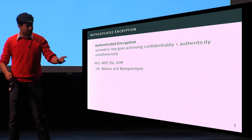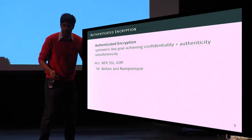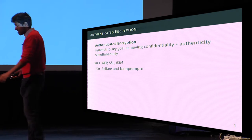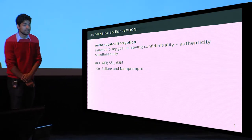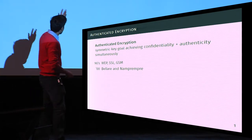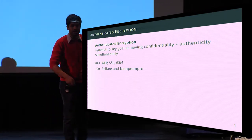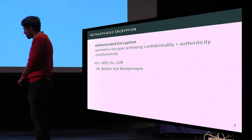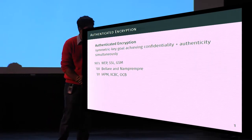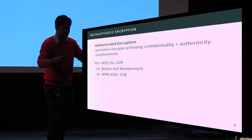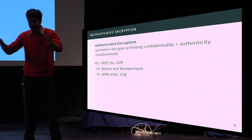This inspired Bellare and Namprimpre in 2000 to identify and isolate the goal of authenticated encryption — the symmetric key goal of achieving confidentiality and authenticity simultaneously. Following that work, there were various back-and-forths between academia and standards bodies. A first wave of dedicated authenticated encryption algorithms emerged, able to add authenticity at very minimal cost over basic encryption algorithms.